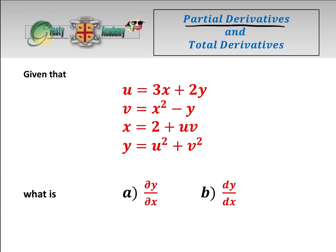Today we're going to keep working on partial derivatives and total derivatives and do a couple of questions. So we have u as a function of x and y, v as a function of x and y, x as a function of u and v, and y as a function of u and v. They're asking us to find the partial derivative of y with respect to x and then the total derivative of y with respect to x.